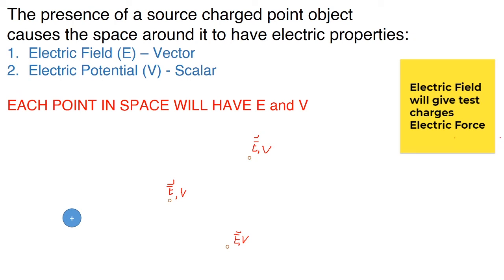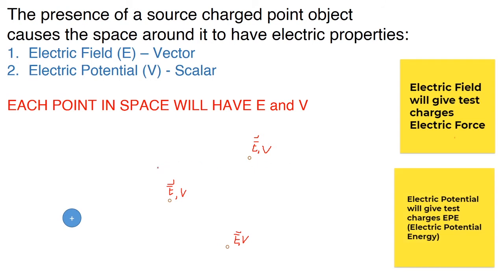When you put a test charge at a point, the electric field will give that test charge an electric force, and the electric potential will give that test charge an electric potential energy value. So electric field gives force in Newtons, and electric potential gives energy in Joules.